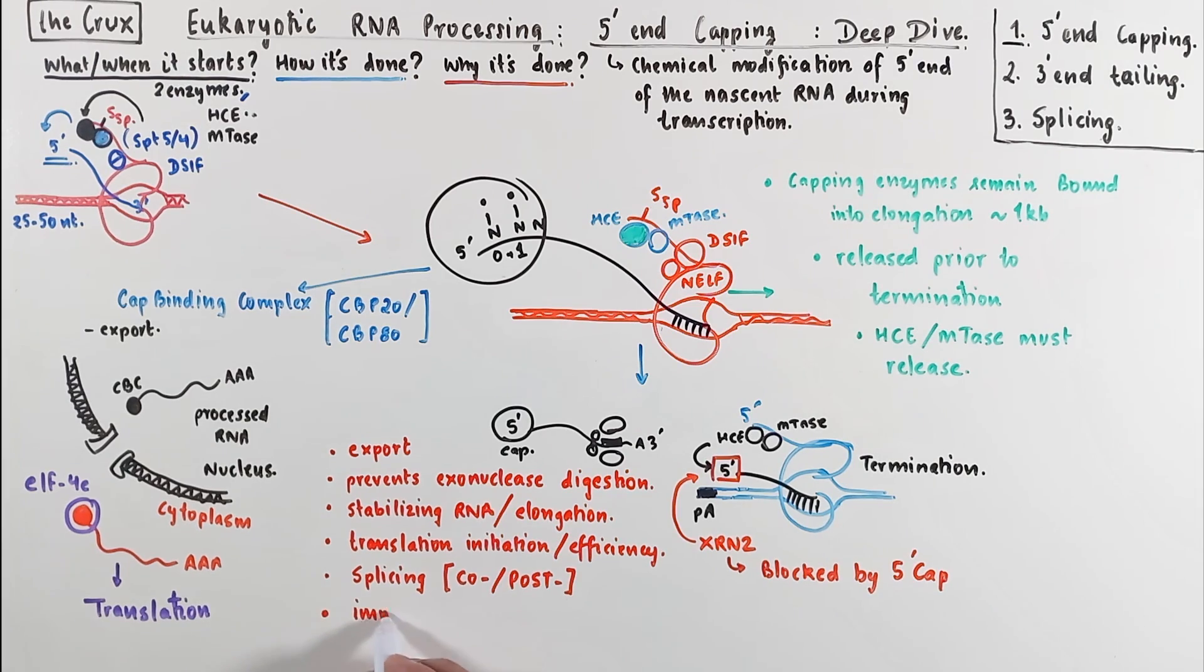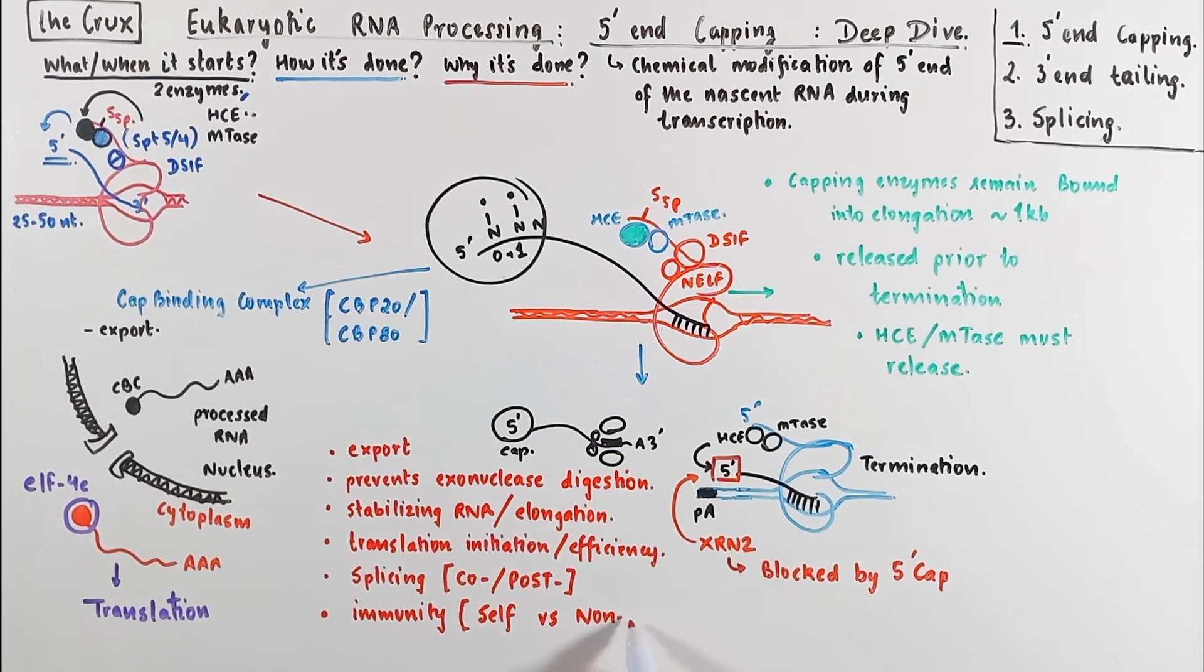Another important reason for capping the RNA is to enable immunity, whereby the cells can distinguish foreign RNA through the presence or absence of a 5' cap. The viral RNAs usually tend to lack a 5' cap, so the cells can oftentimes just digest the viral RNA. And that's a smart way of reducing potential viral infections.